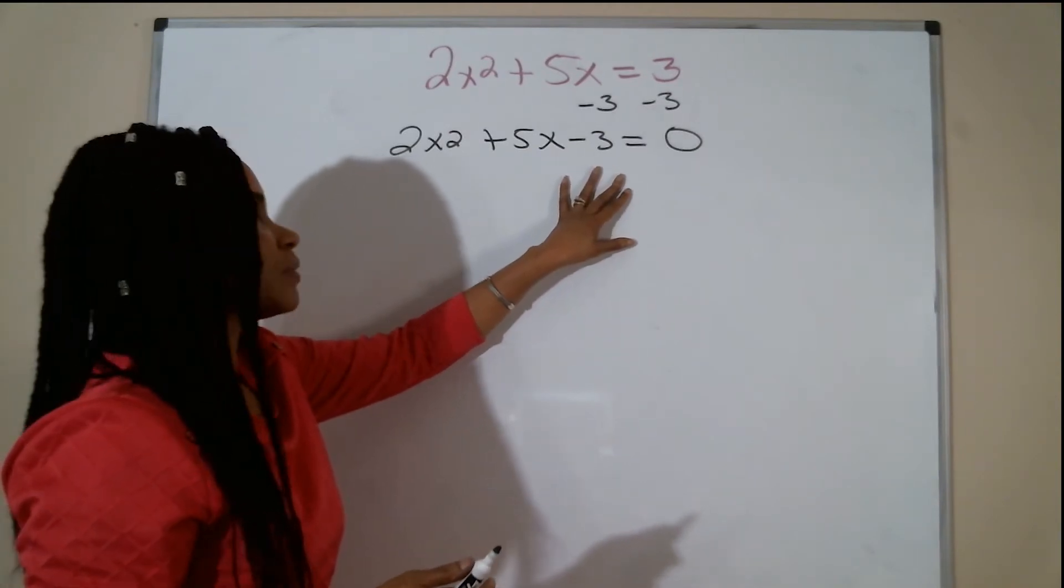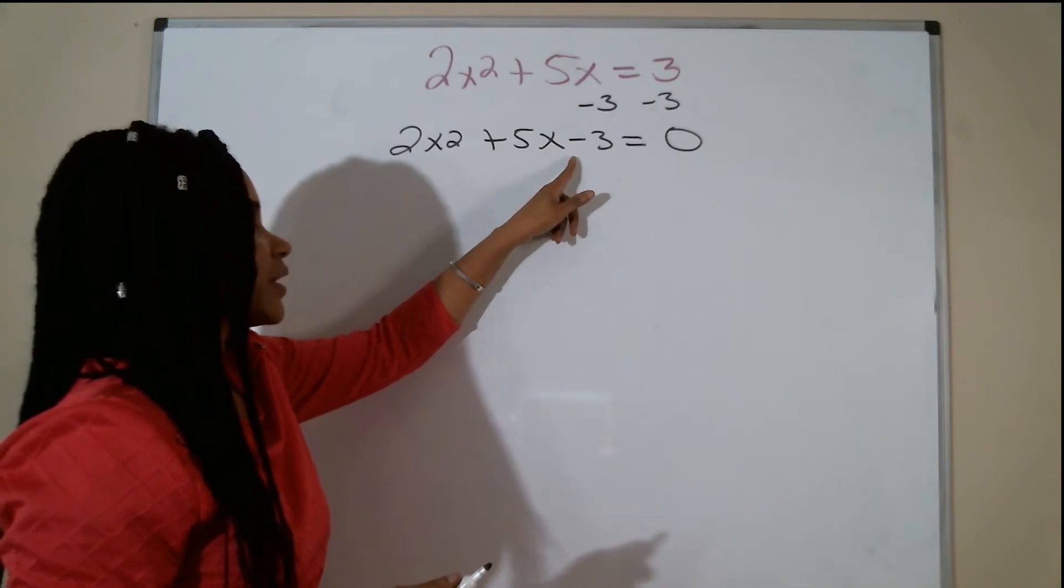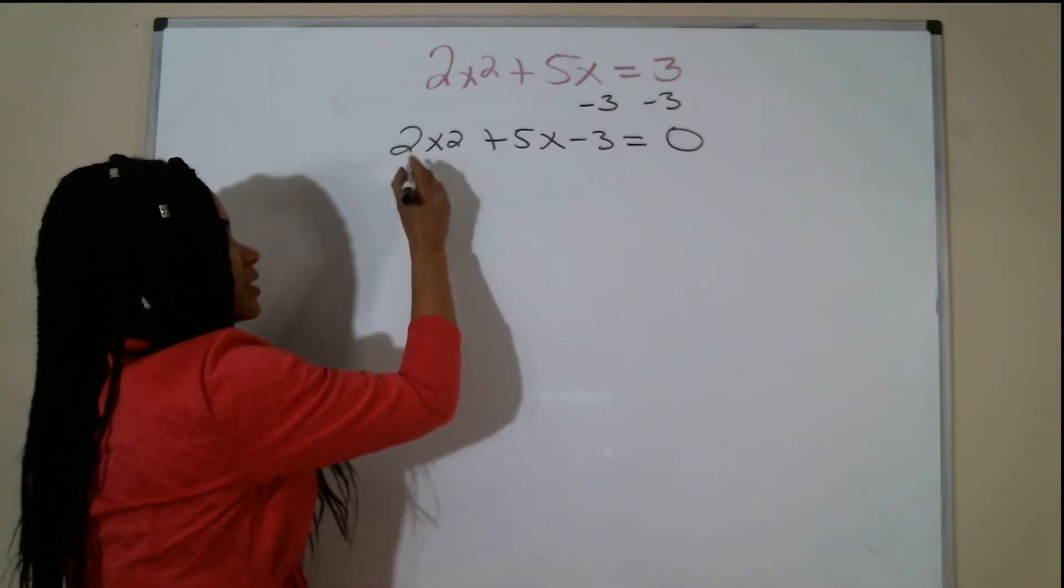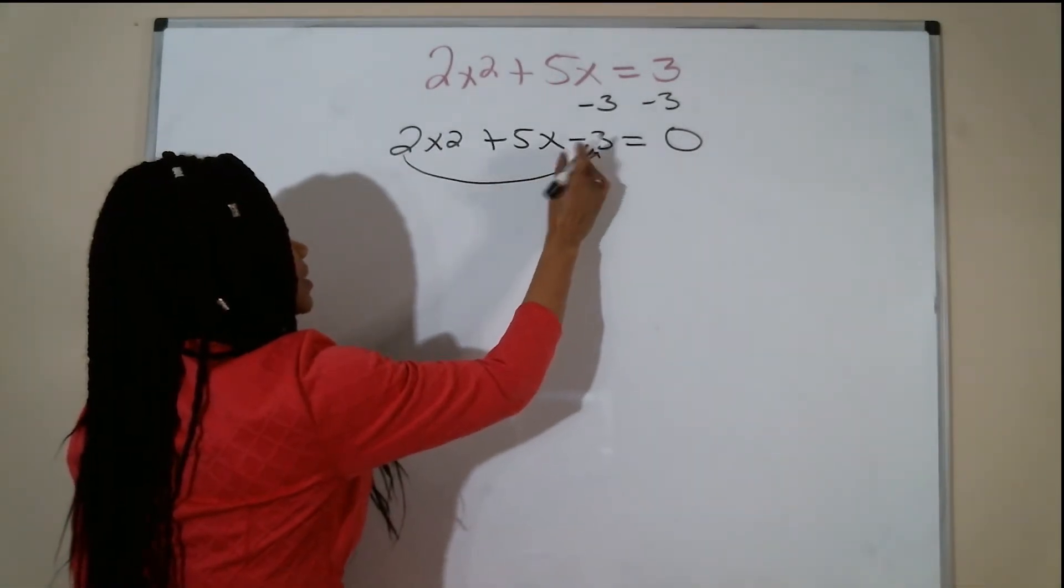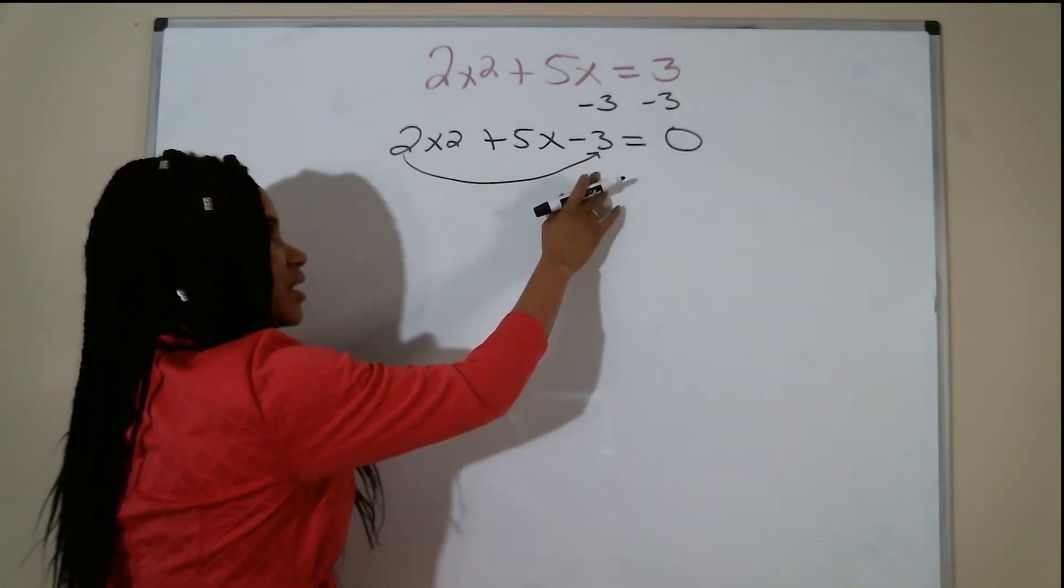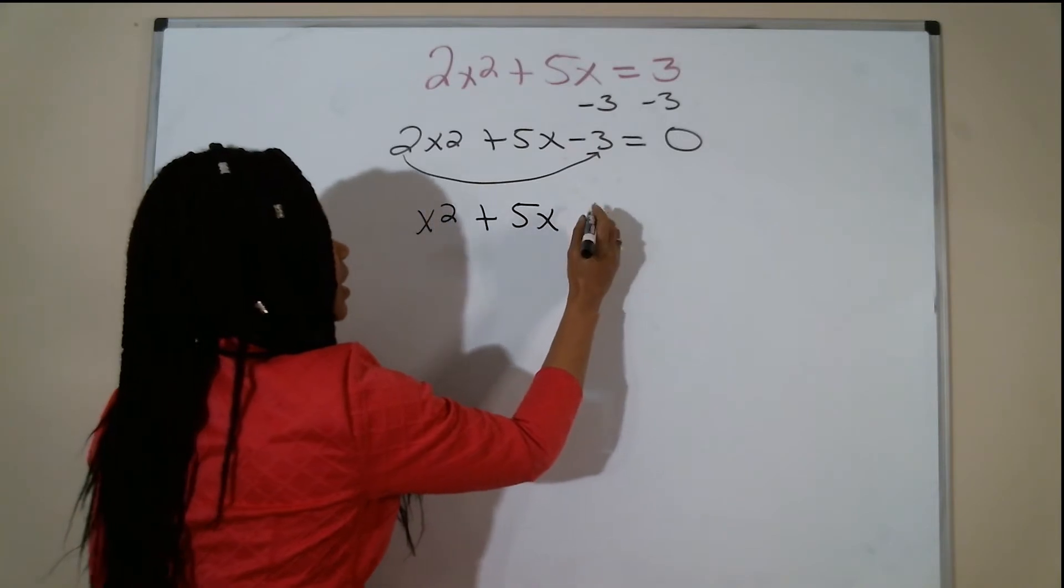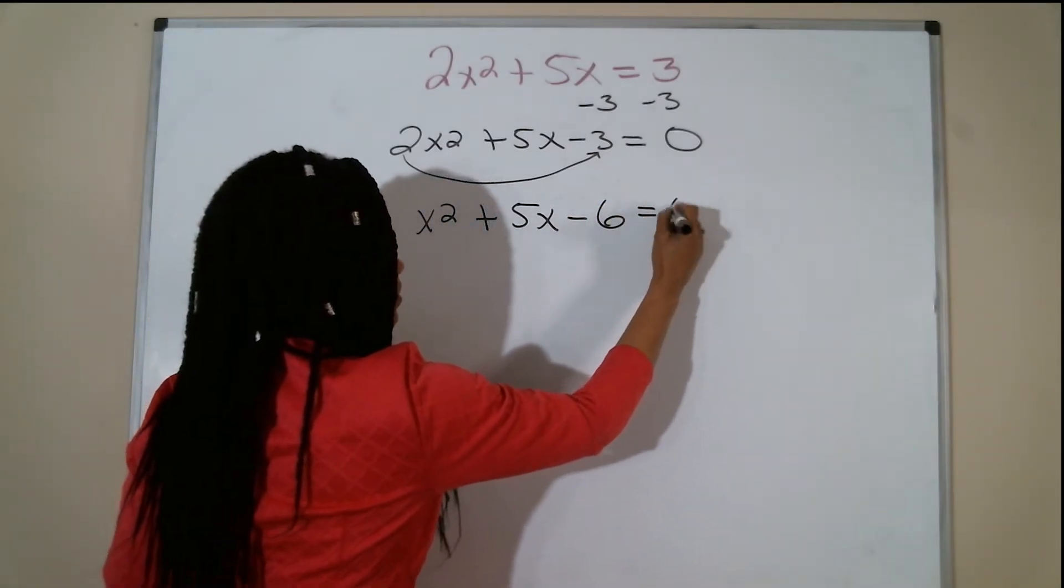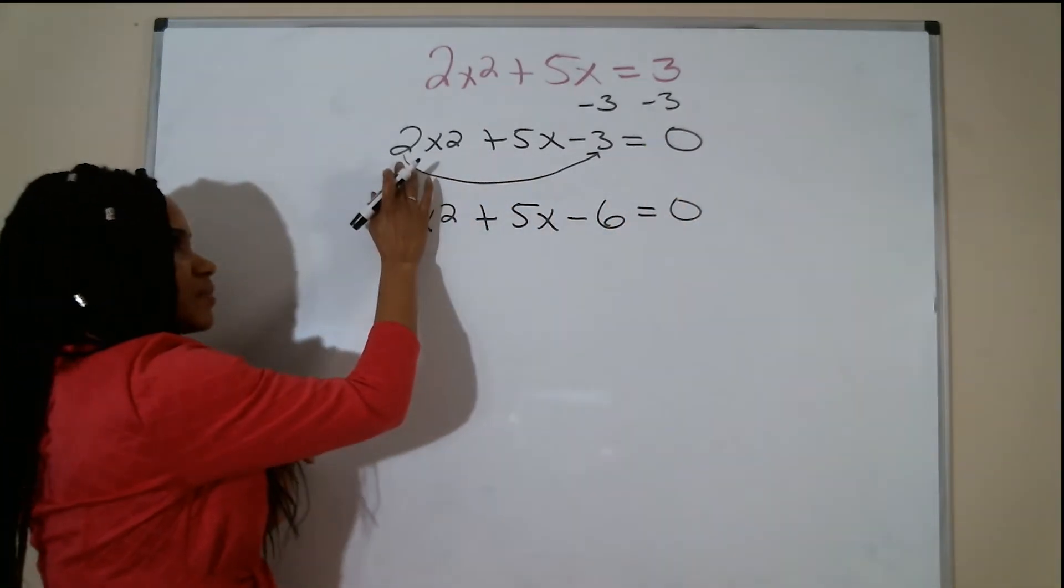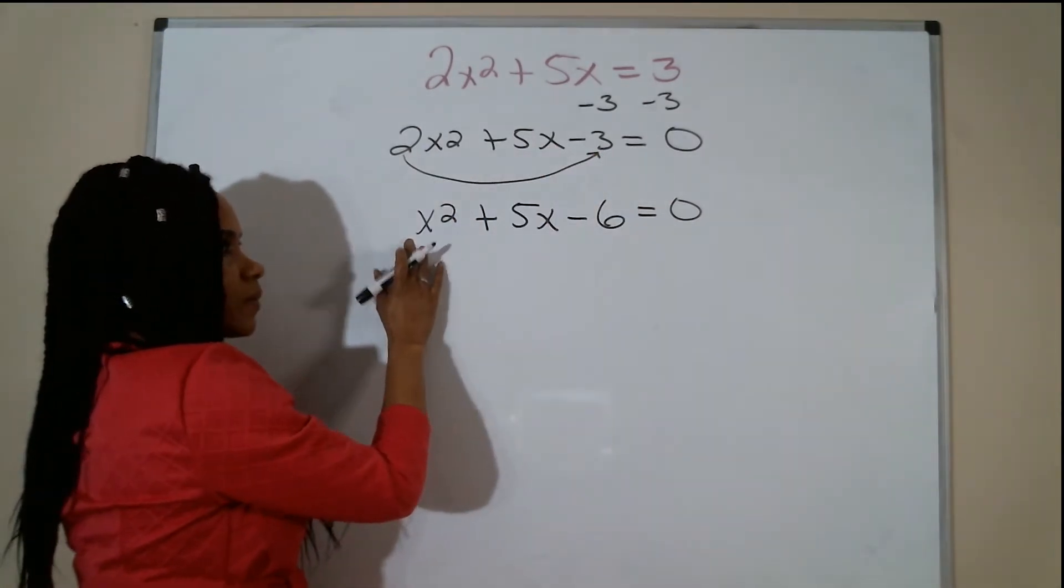So now this is in standard form. I have my x squared, I have my x, and I have my constant. Now to factor using the slip and slide method, the first thing you want to do is slip this first term to the last term and multiply it. So 2 times negative 3 is negative 6. I want to rewrite this as x squared plus 5x minus 6 equals zero.